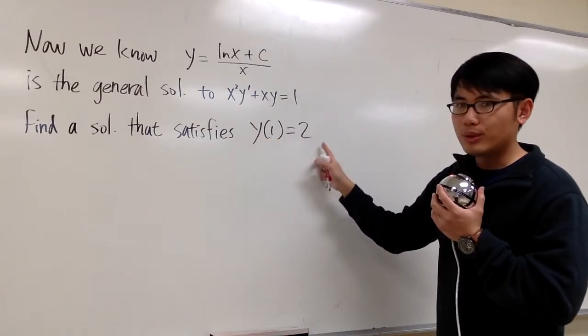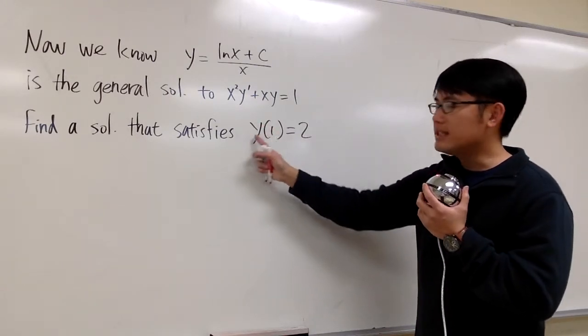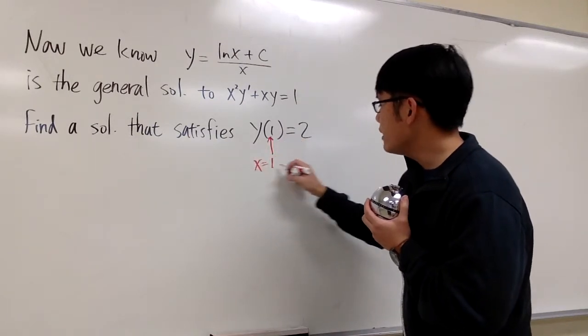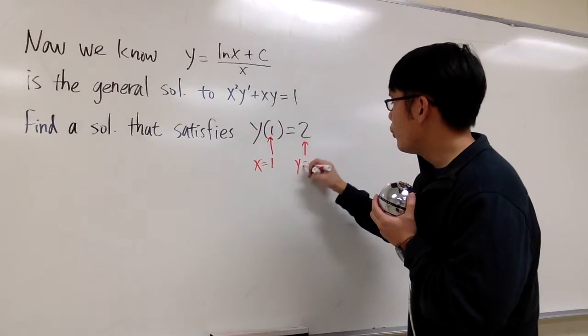And by the way, when they write down y of 1 equals 2, we are saying that y is a function of x. So right here, it means that when x equals 1, the y value will be 2.